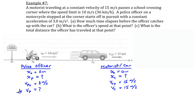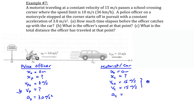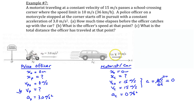The acceleration of the police officer is given as three meters per second squared. The car's acceleration is zero, because velocity is not changing — acceleration is the change in velocity over the change in time, and there is no change in velocity. There's no acceleration for the motorist going at constant velocity. The time it takes for the police officer to reach the car is labeled T — unknown — and it's the same T for both, because they'll be at the same position at the same time.